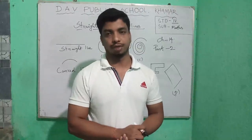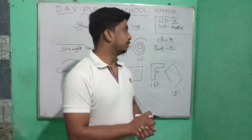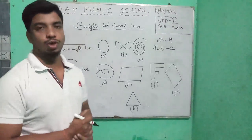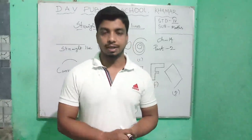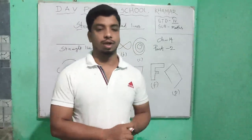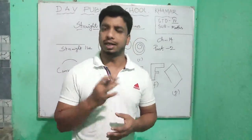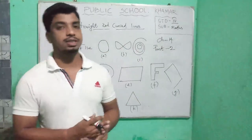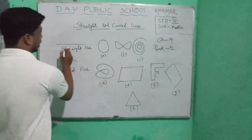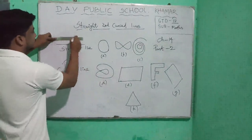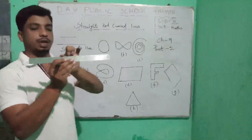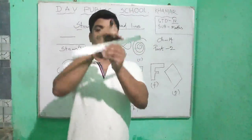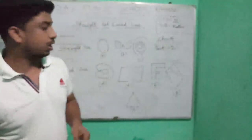Let's start with geometrical figures. First we will know about straight lines and curved lines. So what is a straight line? If you draw a line with a pencil or any pen along a straight edge such as a ruler or scale, these are called straight lines. If you draw a line with the help of this edge of the scale, it will be called a straight line.